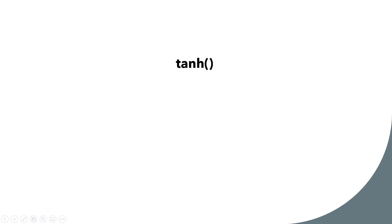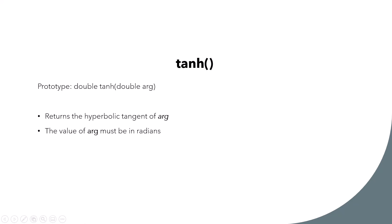Then we have tanh. Again this function returns a double and takes a double as argument. It returns the hyperbolic tangent of the argument, which must be in radians. When plotted on a graph it has its own characteristic shape, again related to the hyperbola.